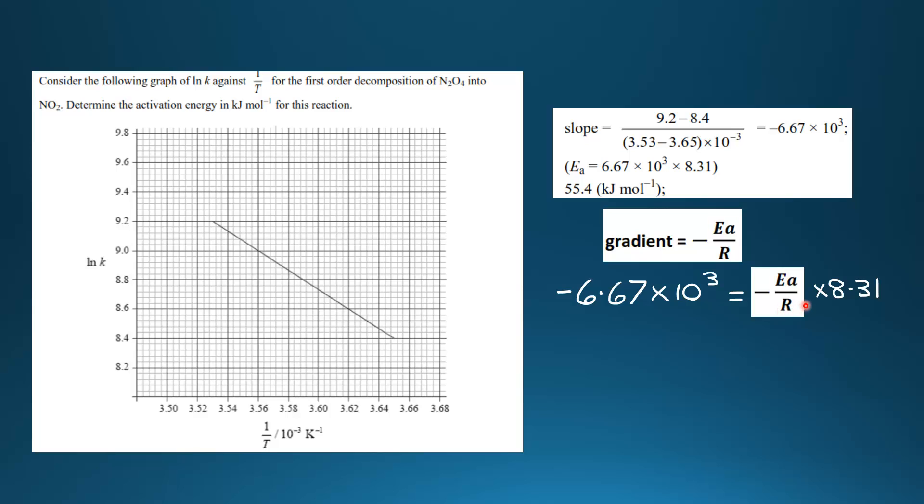If we multiply both sides by the gas constant, which is 8.31, we get Eₐ = 6.67 × 10³ × 8.31. That gives us an activation energy of 55.4 kilojoules per mole.